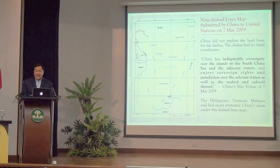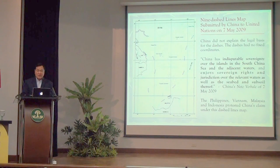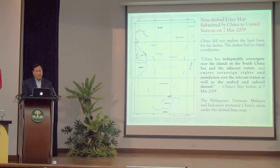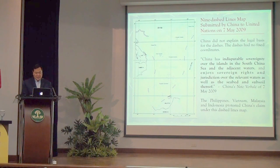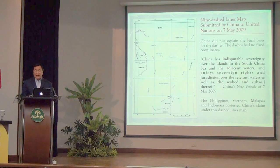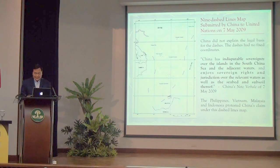The Nine-Dash Lines eat up large areas of the exclusive economic zones of coastal states around the South China Sea. The Philippines, Vietnam, Malaysia, and Indonesia promptly protested China's claim under the Nine-Dash Lines.